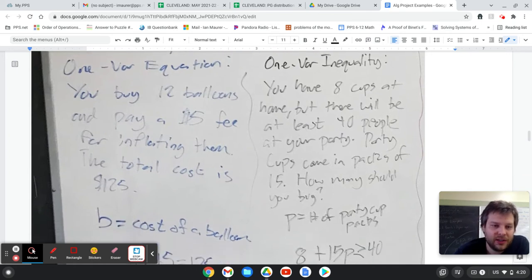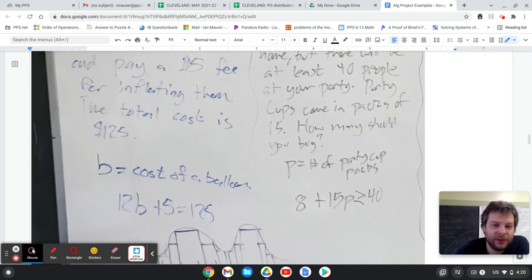One variable equation - you buy 12 balloons and pay a $5 fee for inflating them, and then you have a total cost. So that would be a 12B plus 5 equals 125 sort of equation. You can solve that.